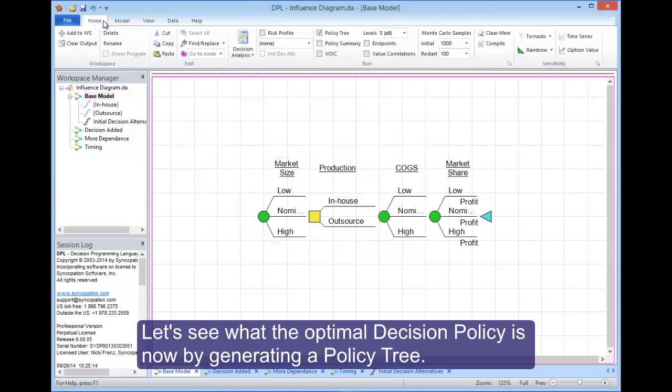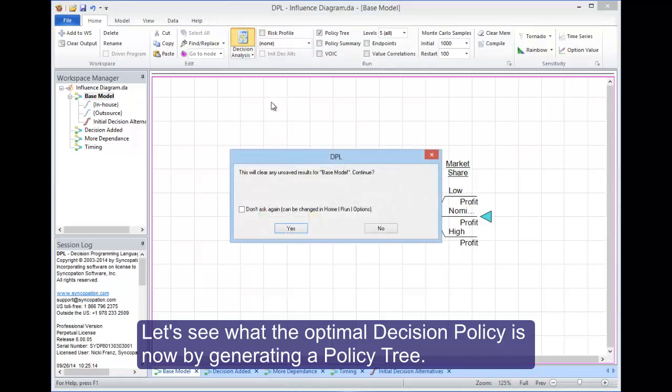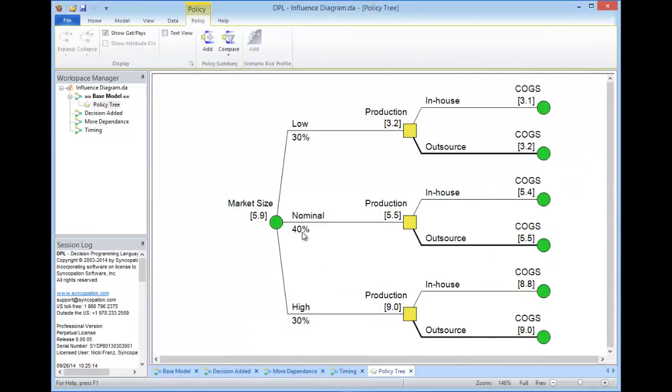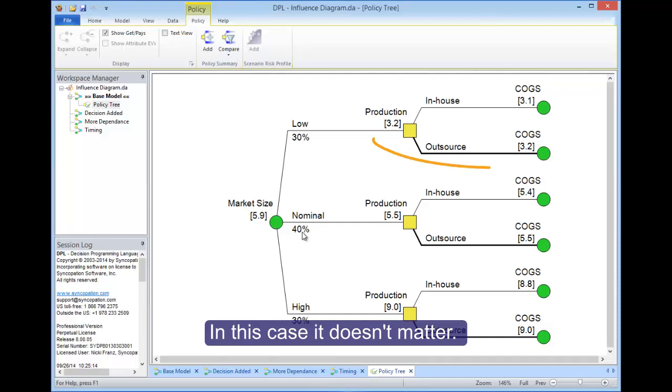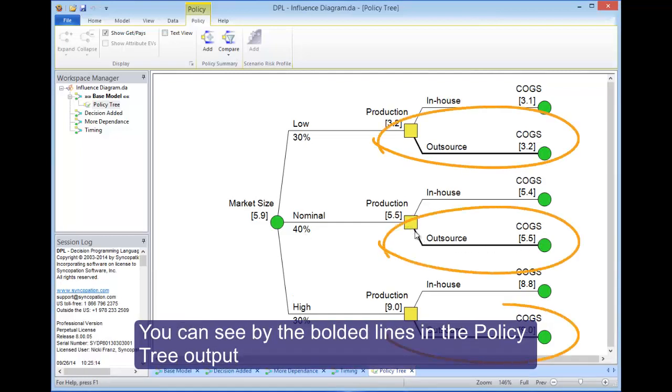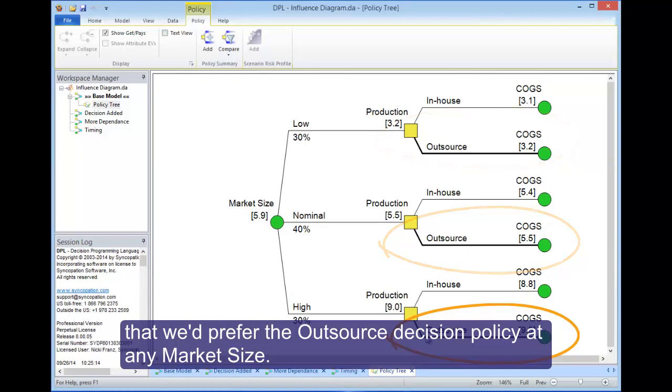Let's see what the optimal decision policy is now by generating a policy tree. In this case, it doesn't matter. You can see by the bolded lines in the policy tree output that we prefer the outsourced decision policy at any market size.